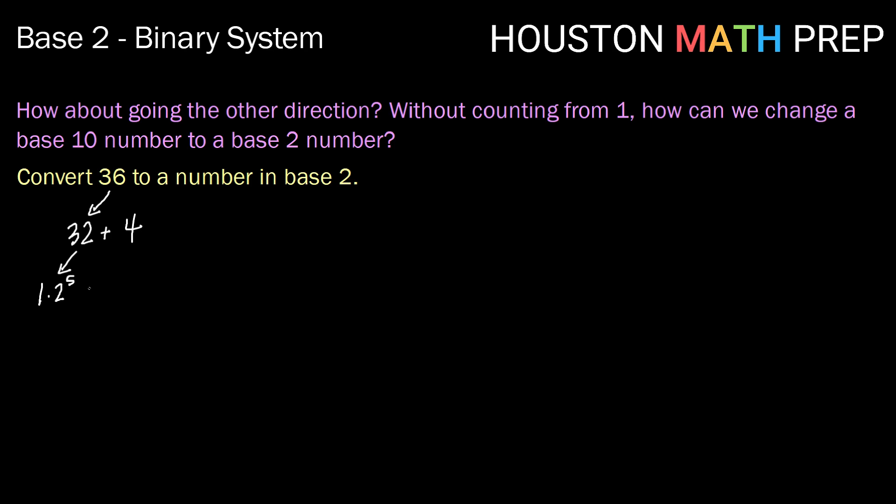plus 1 group of 2 squared, or 4. Starting from the powers of 2, if we go up to the 5th, we have place values for 0, 1, 2, 3, 4, 5. We have 1 group of 2 to the 5th, 0 groups of 2 to the 4th, 0 groups of 2 to the 3rd, 1 group of 2 squared, 0 groups of 2, and 0 ones. Adding our subscript, 100100 is the number 36 in base 2.